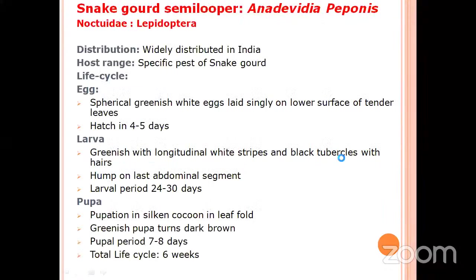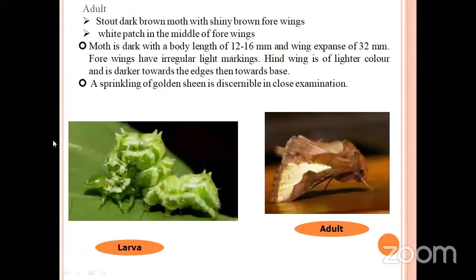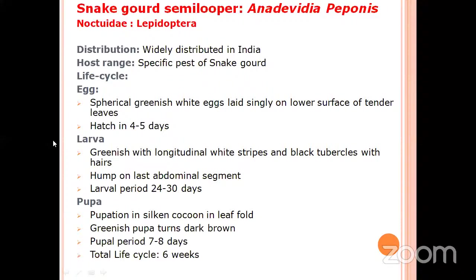Coming to the minor pest — snake gourd semilooper: Anadevidia peponis. It belongs to the family Noctuidae and order Lepidoptera. It is widely distributed in India and is a specific pest of snake gourd. The adult lays spherical greenish-white eggs singly on the lower surface of the leaves. These eggs hatch in about 4 to 5 days, after which the larvae emerge. The larvae are greenish in color with long white longitudinal stripes on the body and black tubercles with hairs. There is a hump on the last abdominal segment. The larval period is 24 to 30 days. Pupation takes place in a white silken cocoon in a folded leaf, and the pupal period is 7 to 10 days.